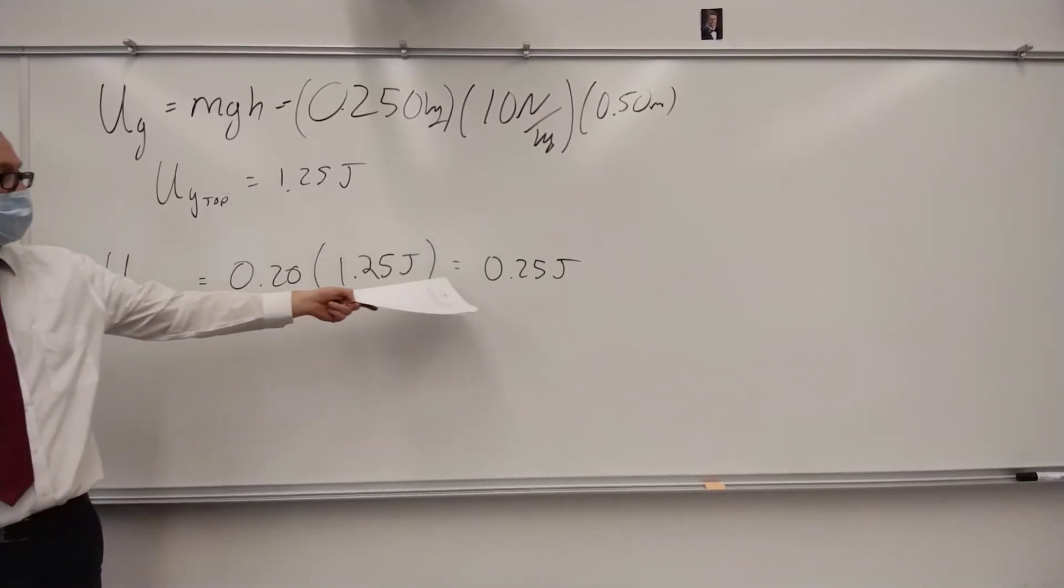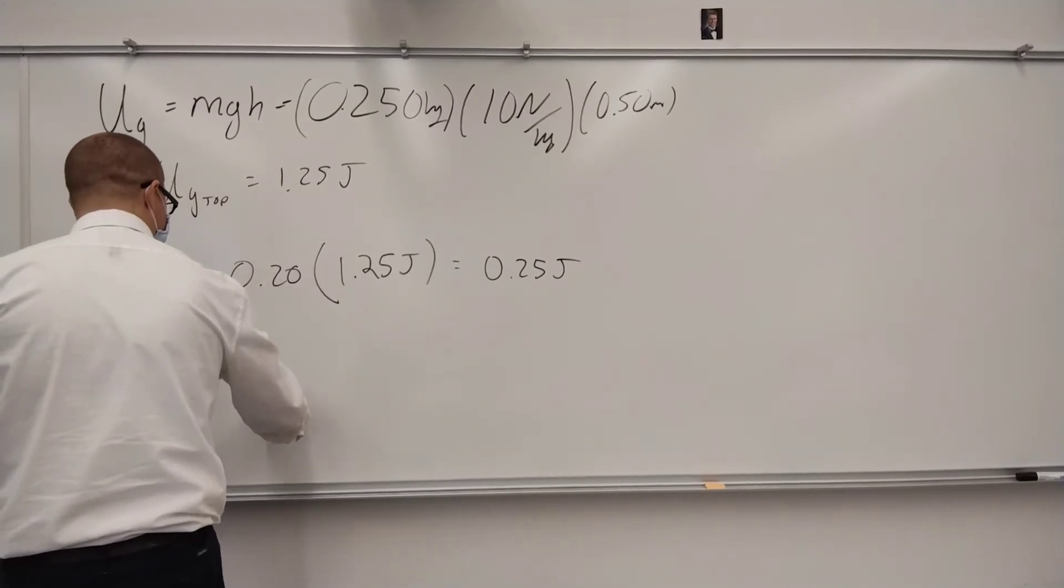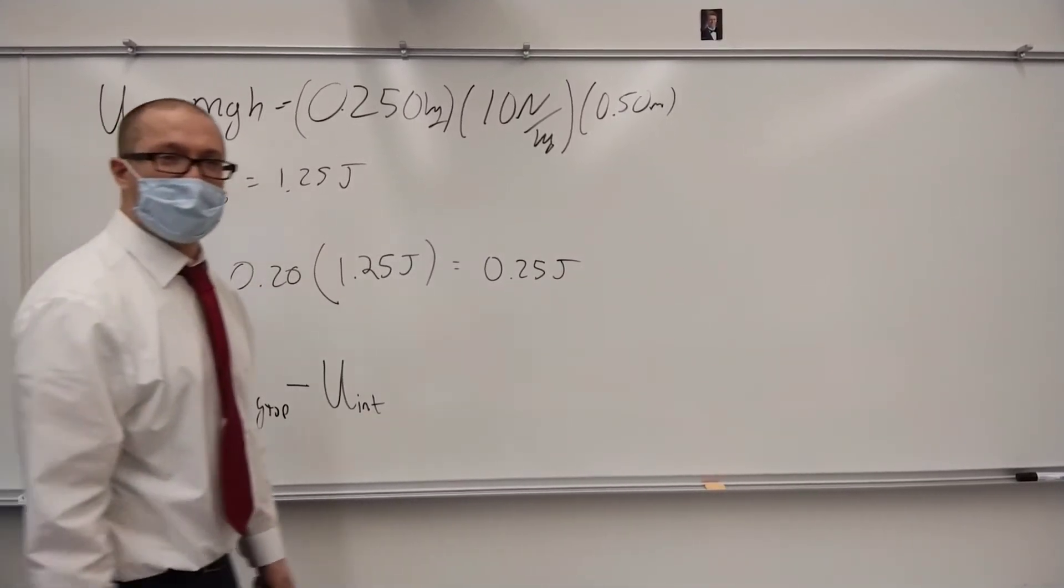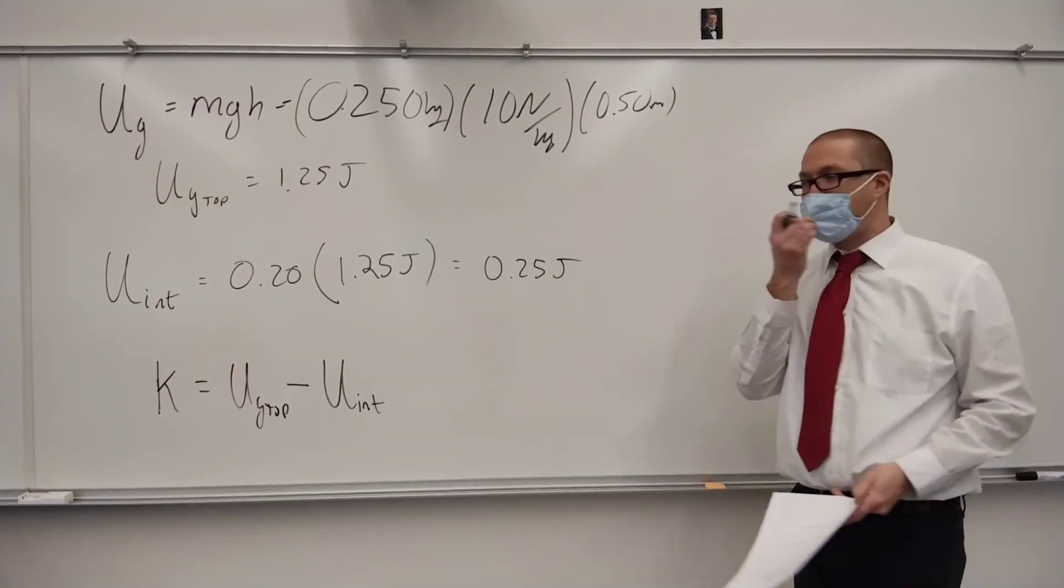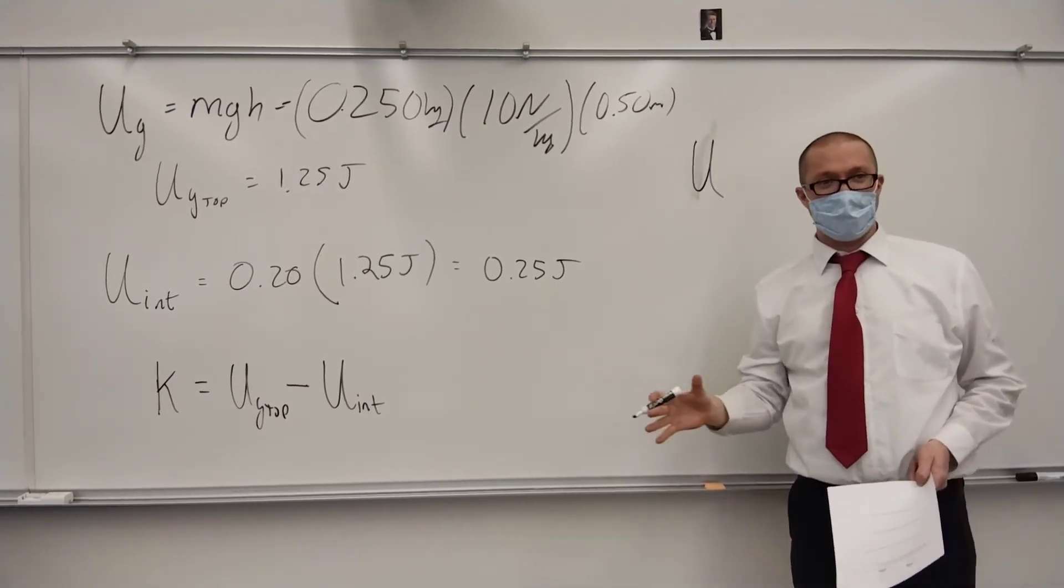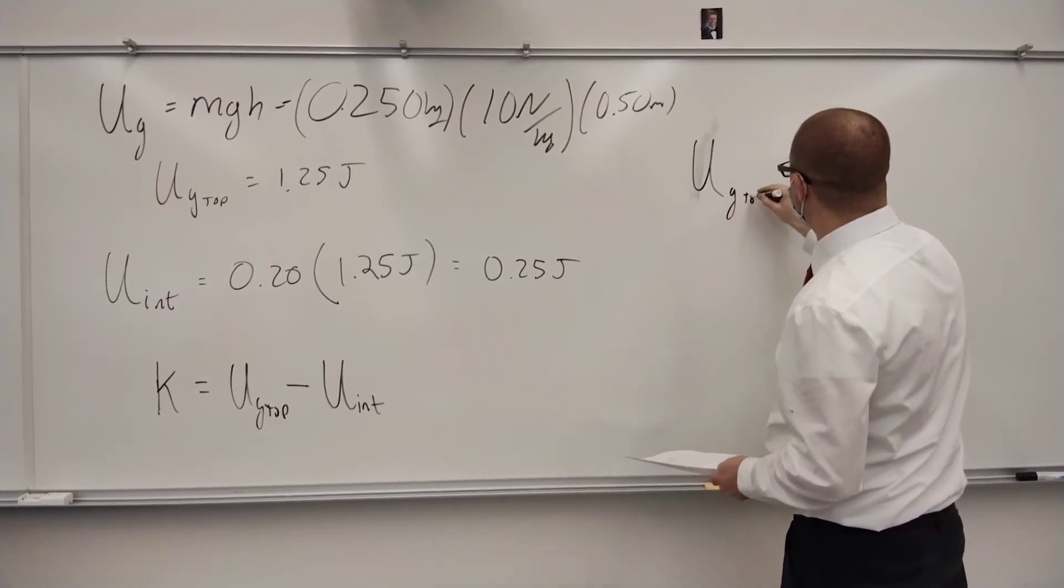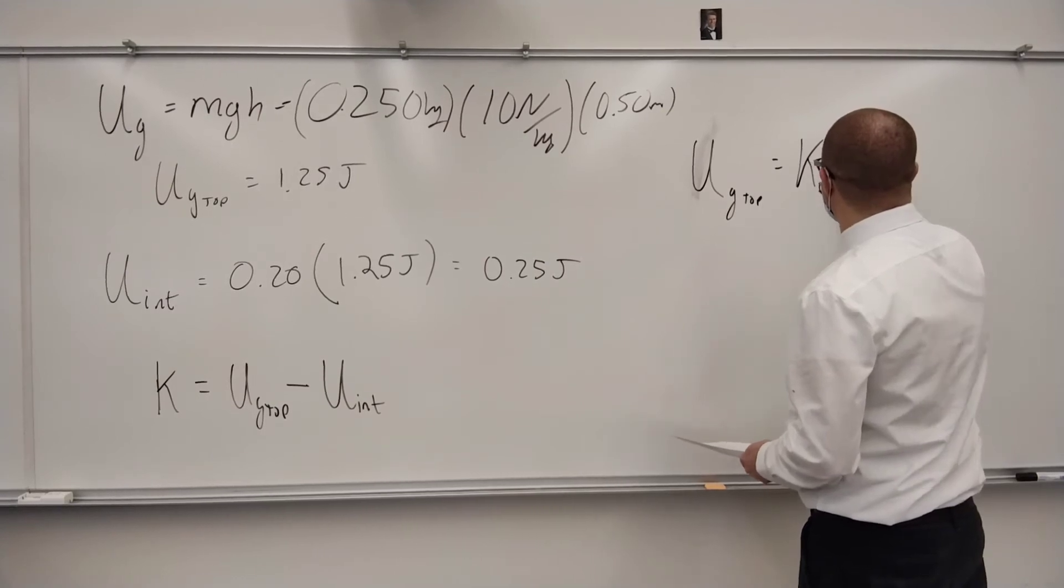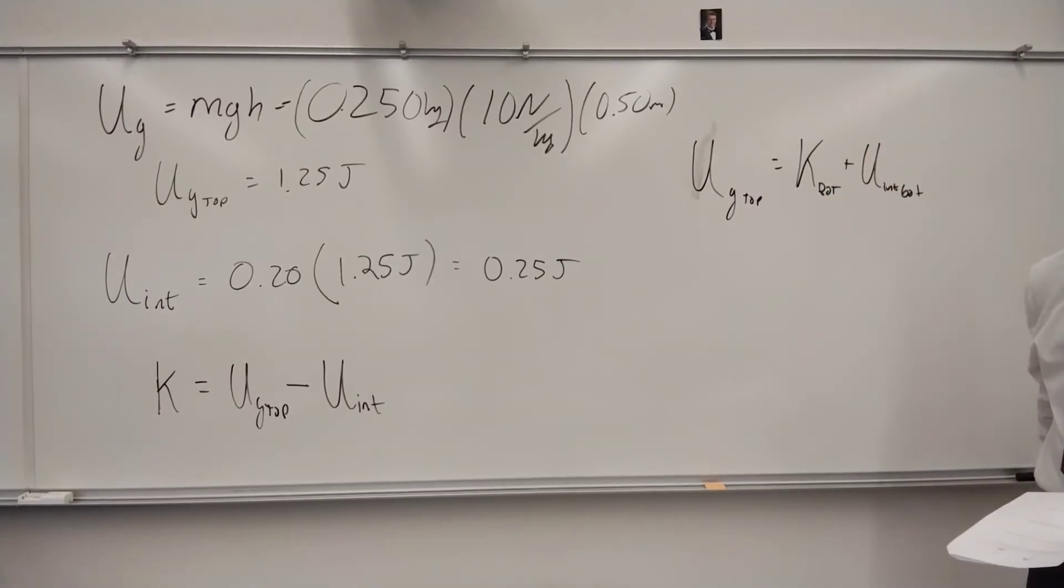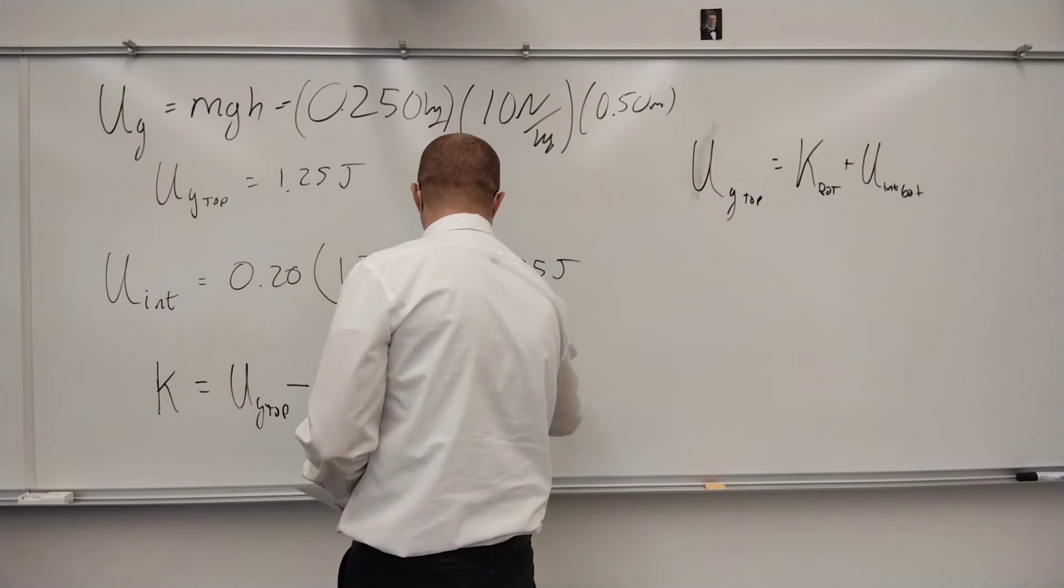All right, so if that's how much internal energy is built up, kinetic energy at the bottom, it's going to be the UG at the top minus the internal energy built up. And one way you can really think of this actually, the overall conservation of energy here for this problem is UG initial equals K at the bottom plus the U internal at the bottom. So that's the conservation of energy for this system. So I know this is 0.25, I know this is 1.25, therefore the kinetic energy at the bottom is 1.0 joules.